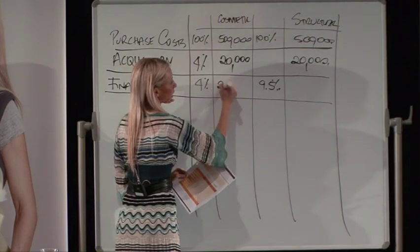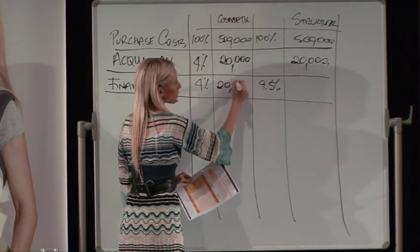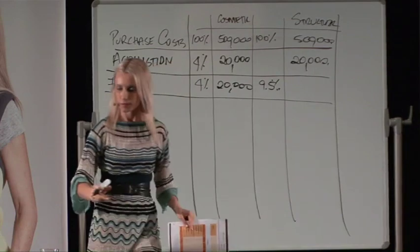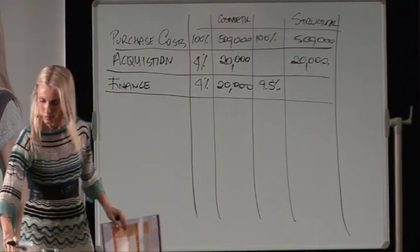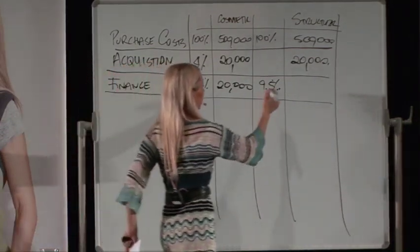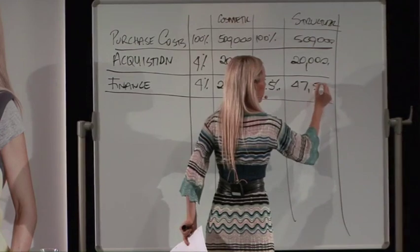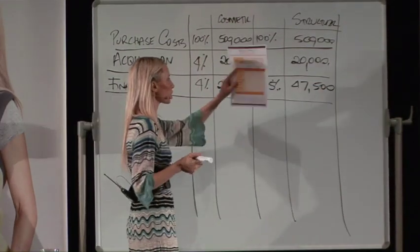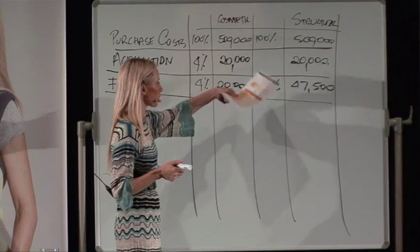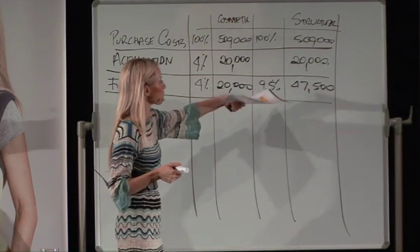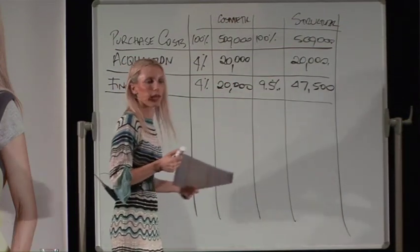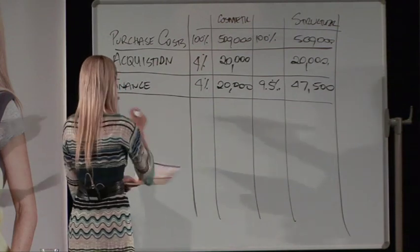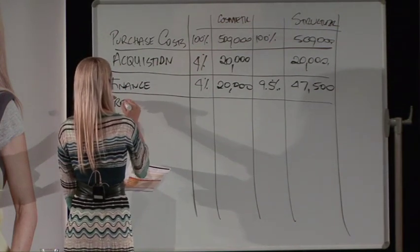So 4% of $500,000 is $20,000 for finance on a cosmetic reno, and 9.5% of $500,000 is $47,500. So if you're holding a structural renovation on a $500,000 property with a 40% renovation budget, your holding costs are going to be $47,500 that you need to factor into your feasibility.